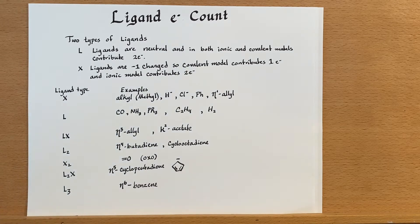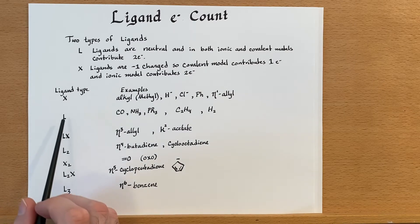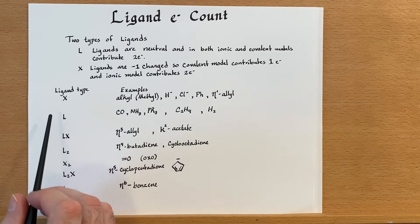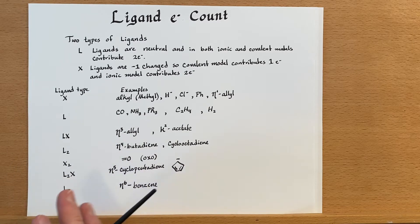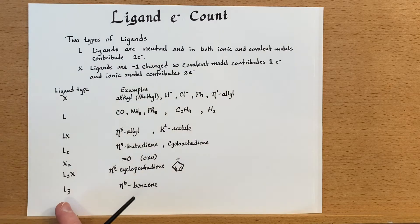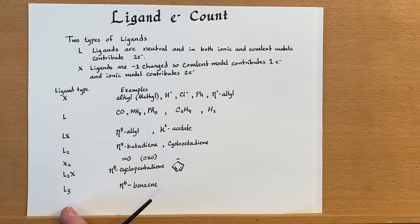Now, how do we put this into practice? We really just need to be able to classify what kinds of ligands are which type, and then when we go to count electrons, we just decide which model we want to use, and then employ the appropriate amount of electrons for that ligand.